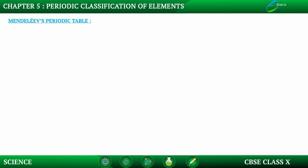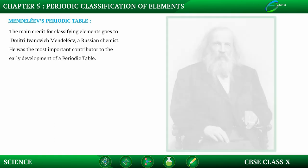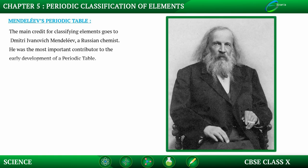After Dobereiner and Newlands both failed in classifying all the elements, another scientist called Mendeleev gave us Mendeleev's periodic table. The main credit for classifying elements goes to Dmitry Ivanovich Mendeleev, a Russian chemist who was the most important contributor to the early development of a periodic table.